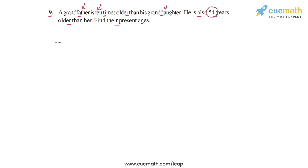So we can start by assuming the granddaughter's age to be some variable. We could assume either the grandfather's age or the granddaughter's age, so let's assume that the granddaughter's age is x years.